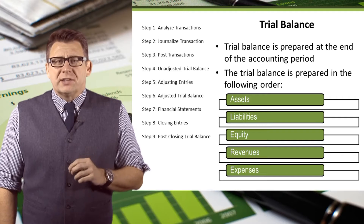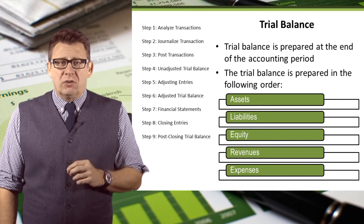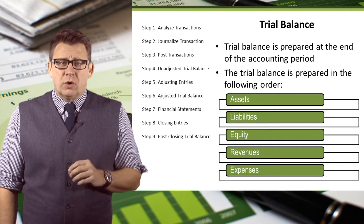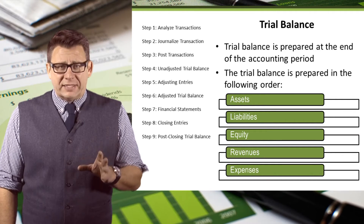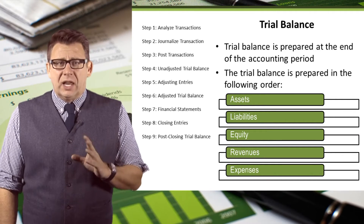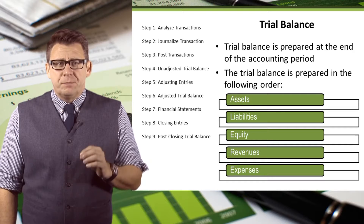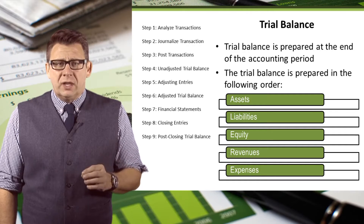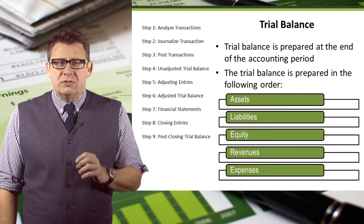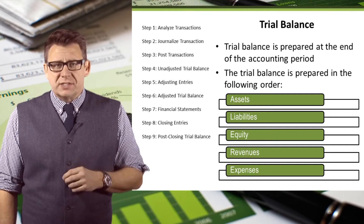The trial balance lists accounts in the following order: assets, liabilities, equity, revenues, and expenses.